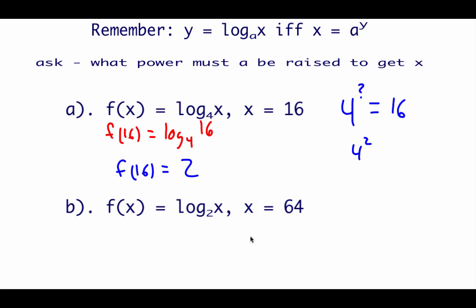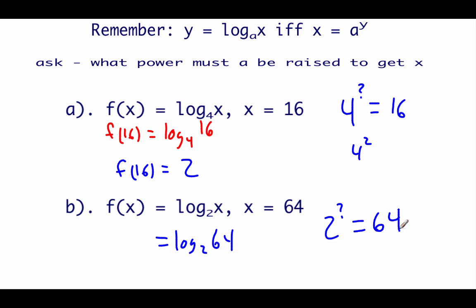On this next one, we're looking at f of x equals log base 2 of x, and we're going to use an x value of 64. So log base 2 of 64, rewriting this as an exponential equation: we're taking 2 to some power, and that has to equal 64. Well, 2 to the sixth power gives us 64, so this answer is 6, because that's the power on this 2 to get us to 64.